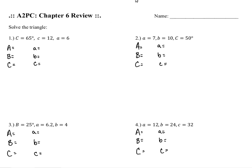For problem number one we are given that angle C equals 65 degrees and side C equals 12. I'm really happy that we have an angle matched up with a side — that's good. We are given that side A is 6, so the three things we will have to find are angle A, angle B, and side B. Because we have a law of sines situation with a paired set — angle C and side C — I'm going to want to make a drawing. There's a possibility that we have an ambiguous triangle and may be getting two solutions.